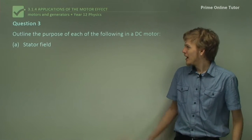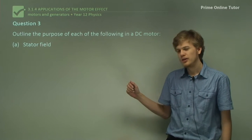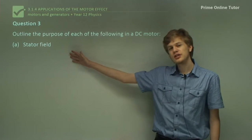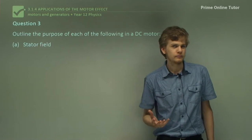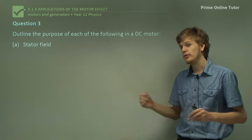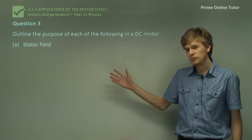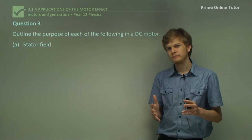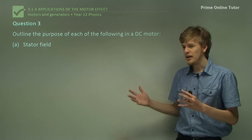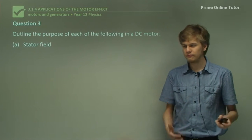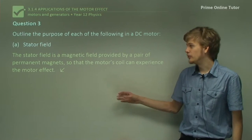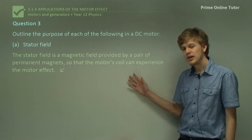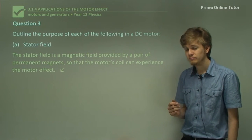Question three: outline the purpose of each of the following in a DC motor. The first part asks us to outline the purpose of a stator field. It's stator, which gives us the clue that it's static, and it's a field. So this must refer to the static magnetic field that passes across the armature. The stator field is a magnetic field provided by a pair of permanent magnets, or electromagnets, so that the motor's coil can experience the motor effect.